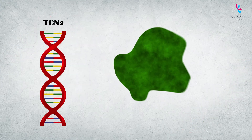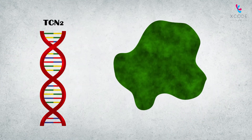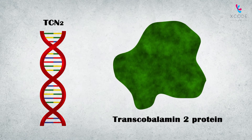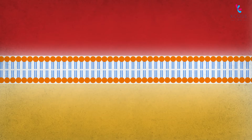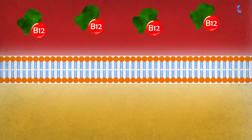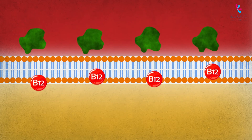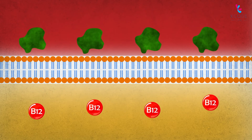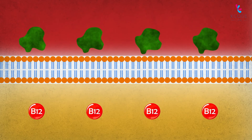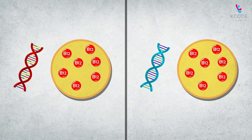The TCN2 gene contains information to produce the transcobalamin 2 protein, which is involved in the transportation of vitamin B12 from the blood to the cells in the body. Variations in this gene can affect your vitamin B12 levels.